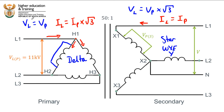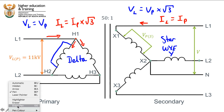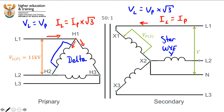Make sure you've got those four expressions noted down — always a good idea to have them ready to refer to when doing these questions. Those four apply to delta and star systems respectively. Now let's go and answer this question.